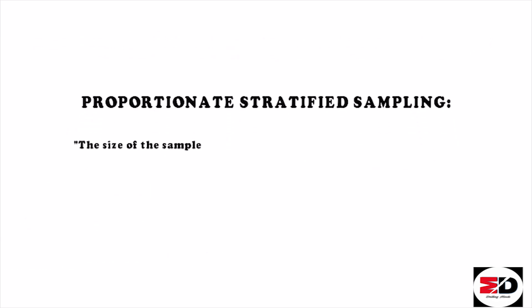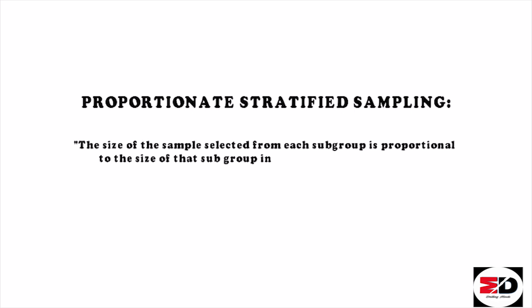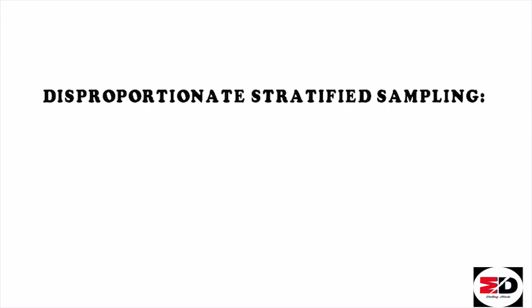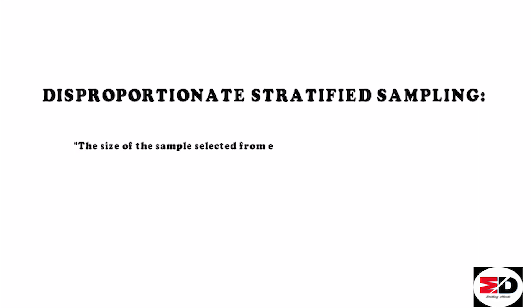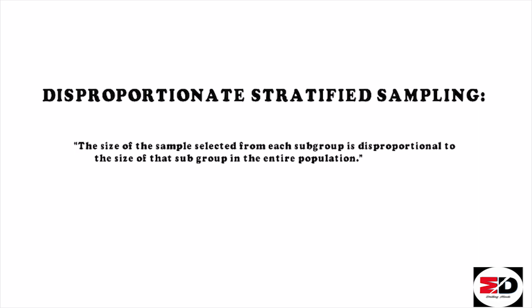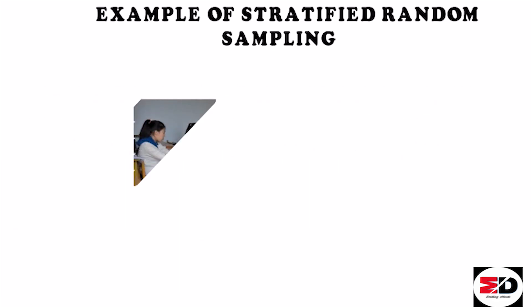In proportionate stratified sampling, the size of the samples selected from each subgroup is proportional to the size of that subgroup in the entire population. In disproportionate stratified sampling, the size of the sample selected from each subgroup is disproportionate to the size of that subgroup in the entire population.